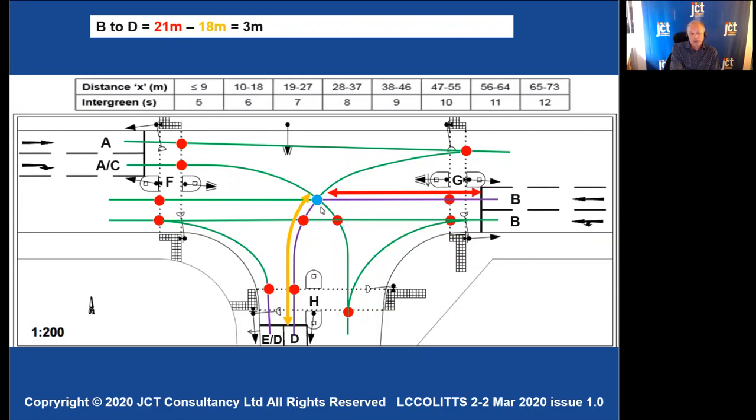What we then do is we subtract from that the distance from the stop line for D to the same collision point, in which case I get to be 18. Now, you can have a look at your own measurements for this. There'll be something similar. You shouldn't be getting anything radically different. And that will give me an X distance of 3 meters. So I write that one down.